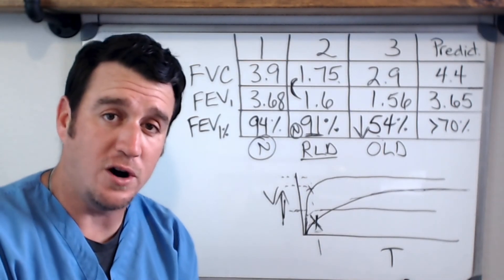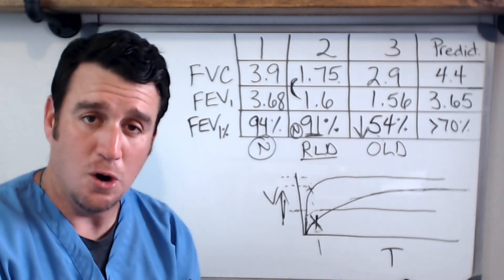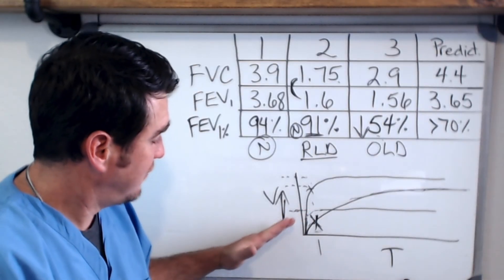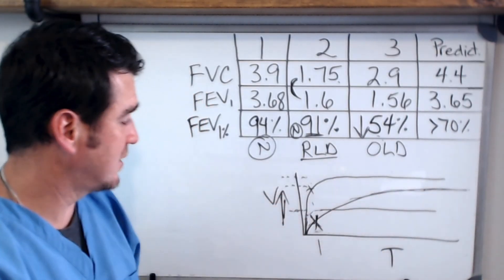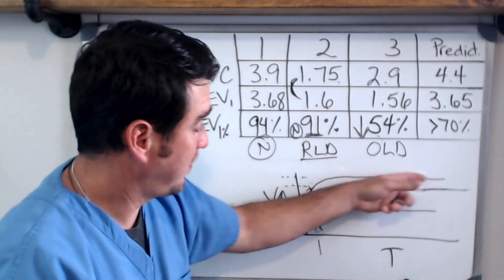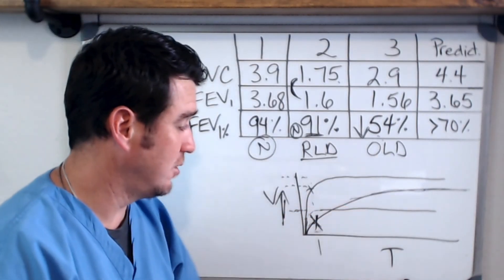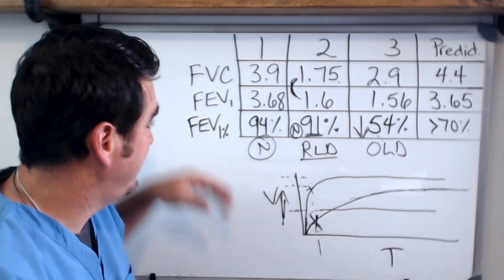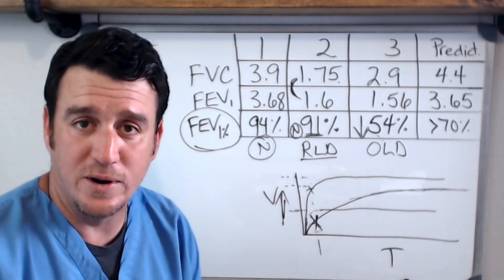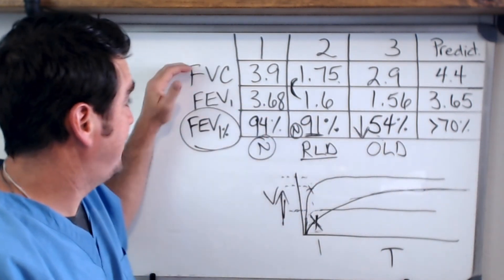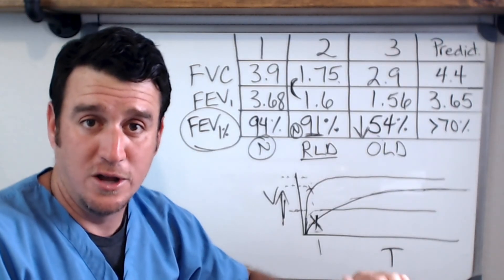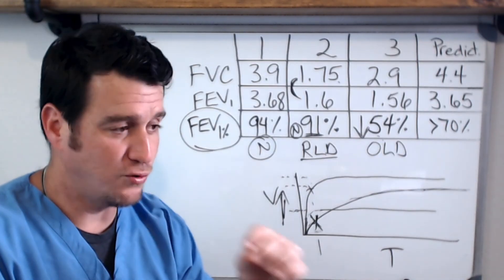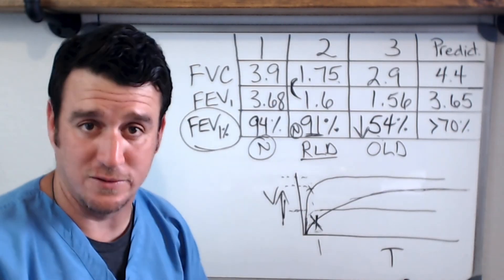Those are the key things to remember for pulmonary function testing from the FVC and FEV1 perspective. The FEV1 percent ratio is your differentiating factor. A scoop in the flow volume loop indicates obstructive lung disease; a small tight witch's hat indicates restrictive lung disease. On the volume-time waveform: a slow rise equals obstructive, a normal steep rise with plateau is normal, and a smaller normal rise with plateau is restrictive. Remember: FVC and FEV1 percent of normal use 80% as the cutoff. The FEV1 percent ratio uses 70% — less than 70% is obstructive, greater than 70% is either normal or restrictive.